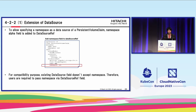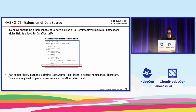To allow a cross-namespace data source for a PersistentVolumeClaim, a namespace alpha field is added to dataSourceRef. For compatibility purposes, the existing dataSource field doesn't accept a namespace. Therefore, users are required to pass the namespace via the dataSourceRef field.